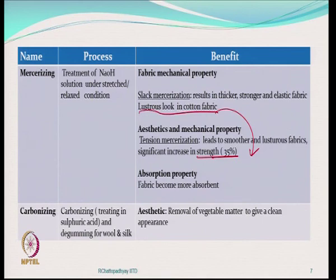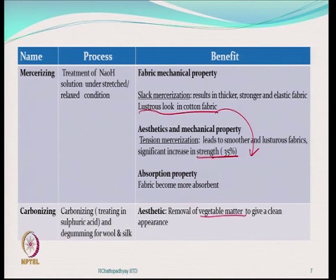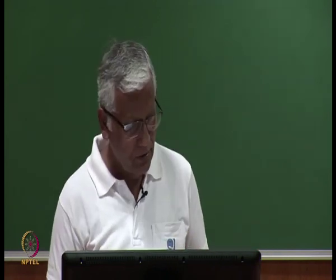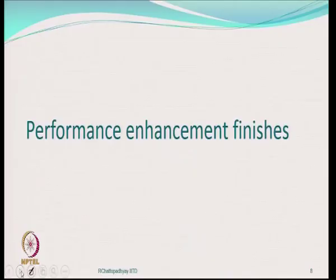Another treatment is carbonizing, mostly done on wool, and de-gumming techniques are also used generally for silk fibers. These enhance the aesthetic value of wool fabric or silk fabric by removing vegetable matter from wool fibers. Ultimately, many techniques are available through which we can enhance the aesthetic value of the fabric by making it look lustrous, or sometimes improve certain performance by generating more hairs on the surface or by enhancing the strength.